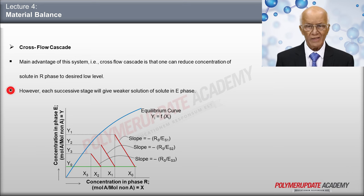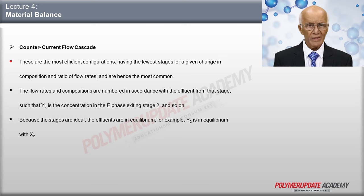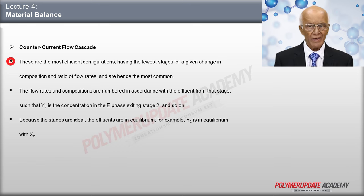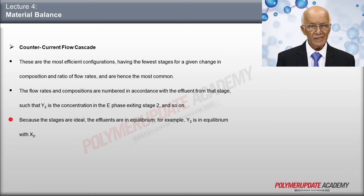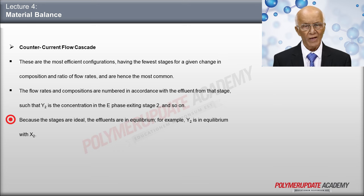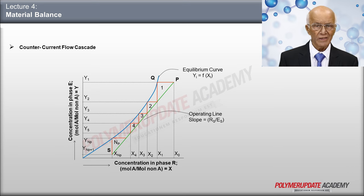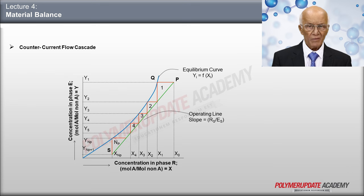However, each successive stage will give weaker solutions of solute in the E phase. Counter-current flow cascades are the most efficient arrangements, requiring the fewest stages for a given change of composition and ratio of flow rates, and they are therefore most frequently used. The flow rates and compositions are numbered corresponding to the effluent from that stage, so that y2 is the concentration in the E phase leaving stage 2, and so on. Since the stages are ideal, the effluents are in equilibrium — that is, y2 is in equilibrium with x2, and so on.